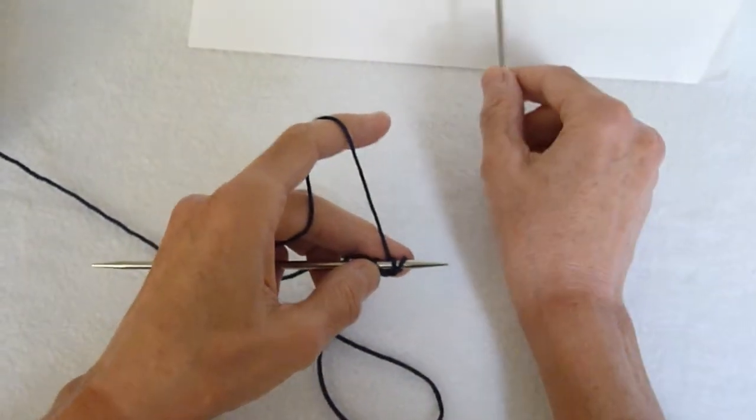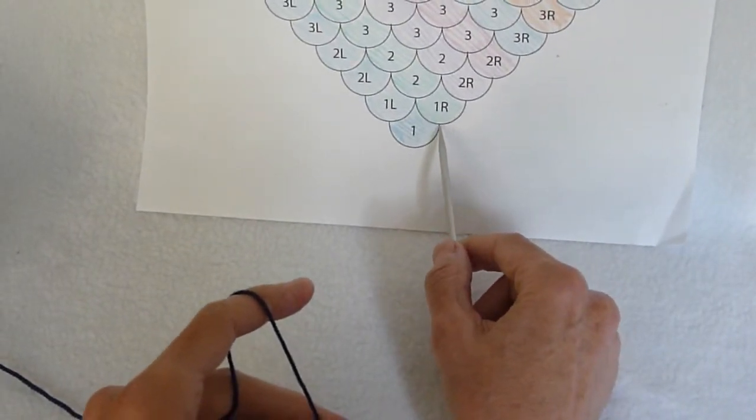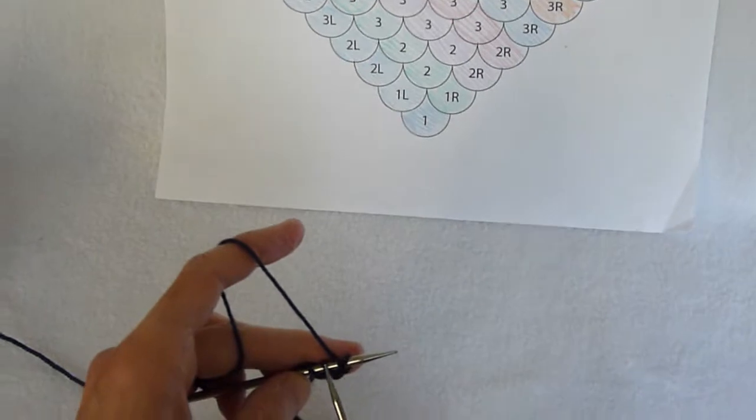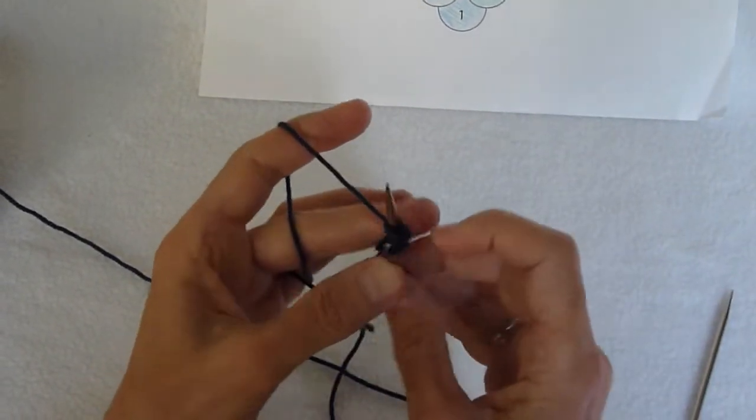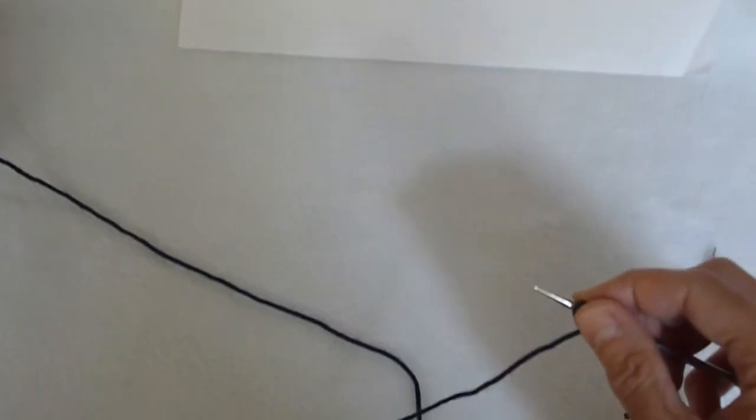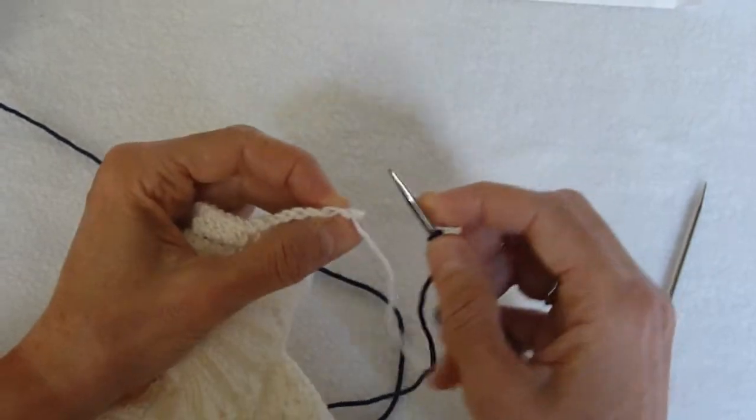Now when we cast on on the right-hand side, we cast on 24 stitches in this manner, cable edge. Once 24 stitches are on the needle, we turn this needle around, take our scallop, and start picking up stitches from the bottom.